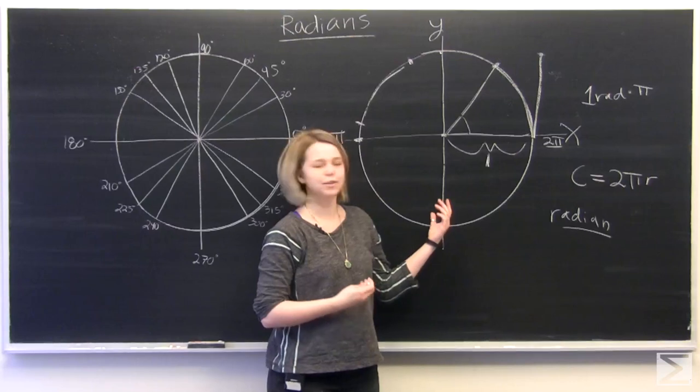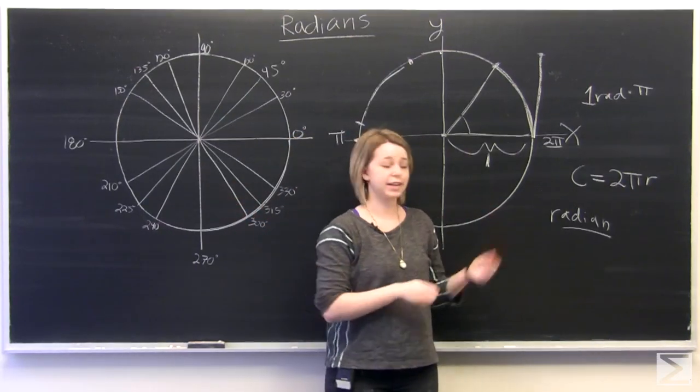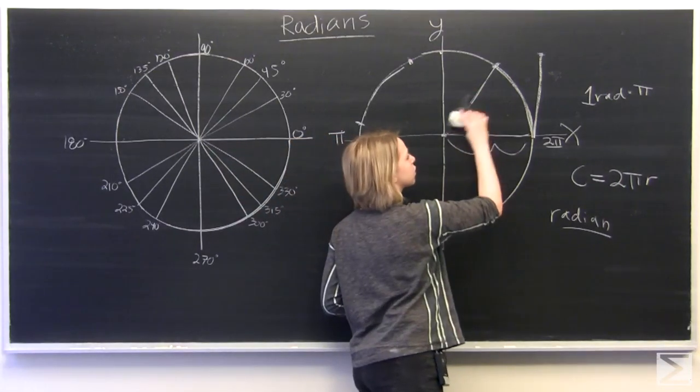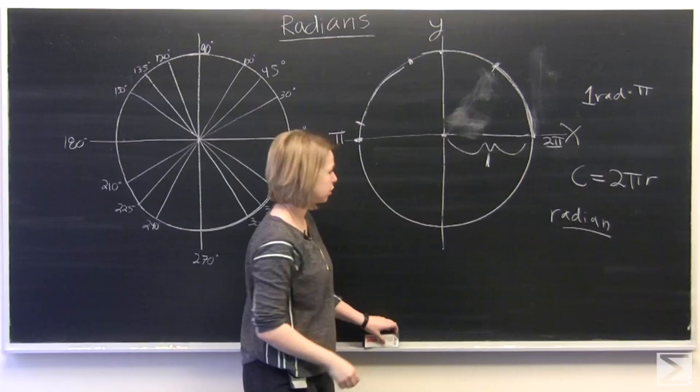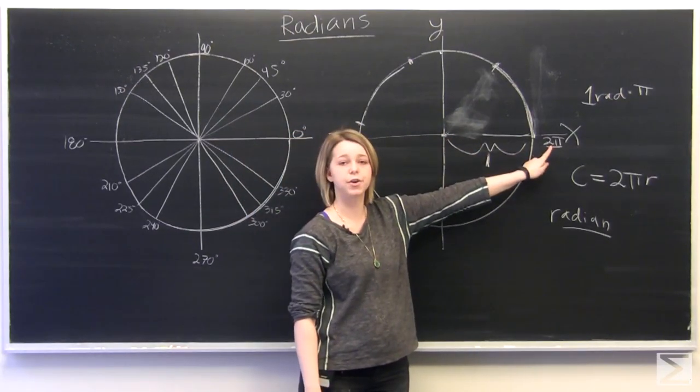So now let's figure out why the degrees relate to radians. We have 0 radians, pi radians, and 2 pi radians mapped out already.